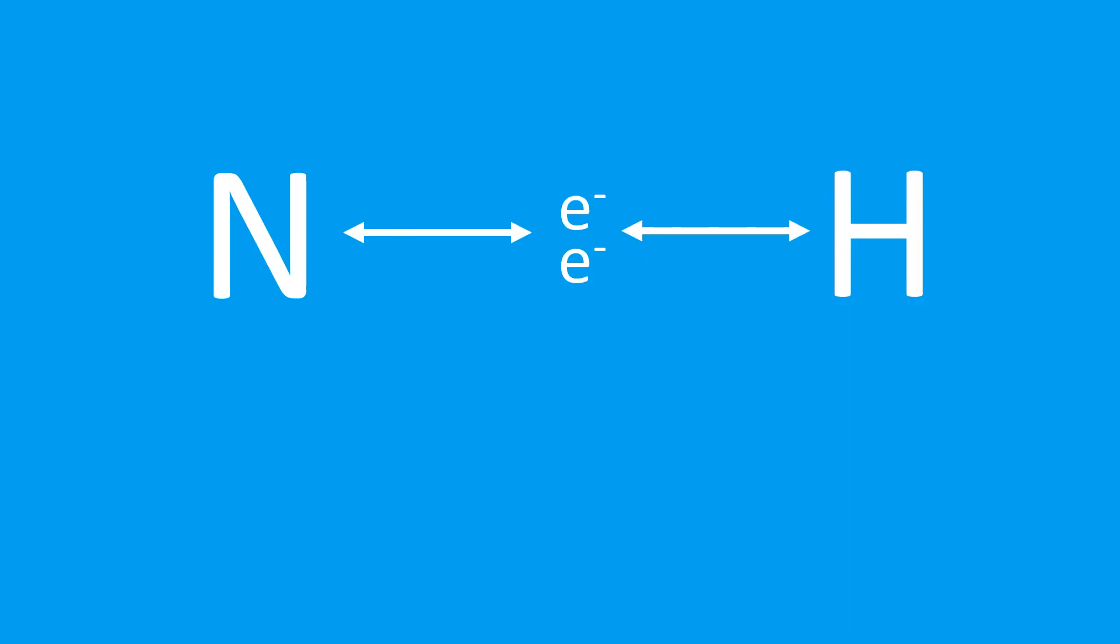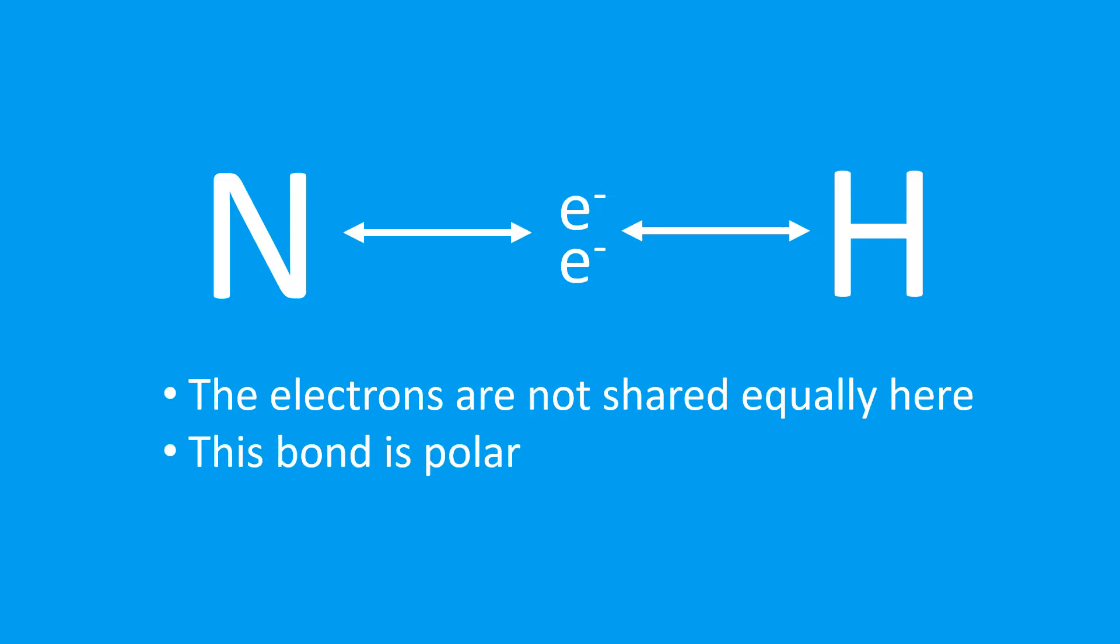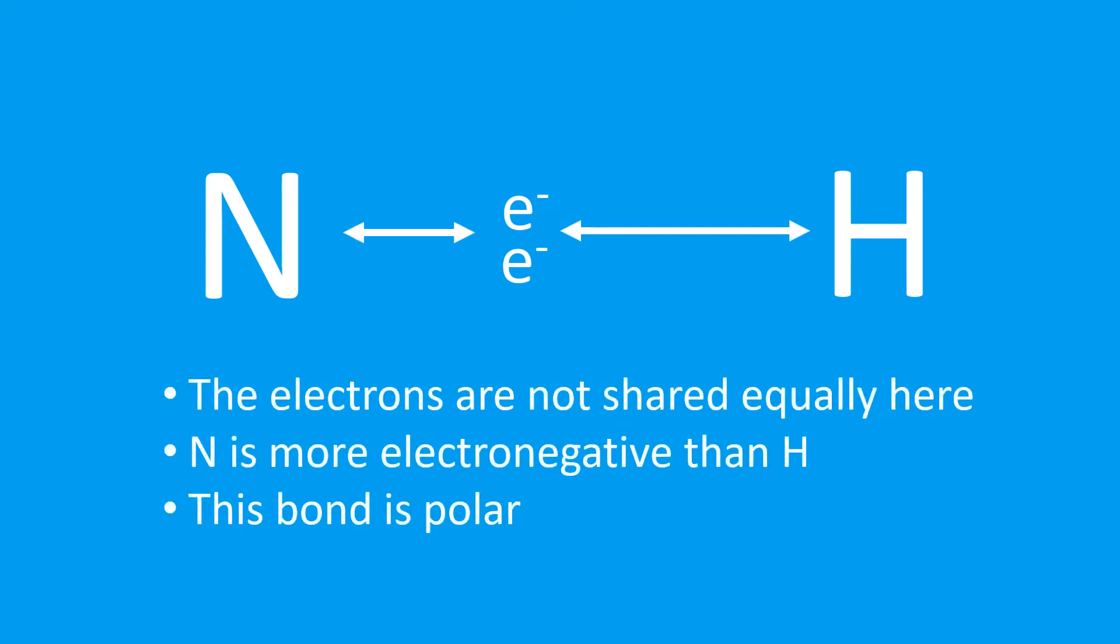Let's look at an example. Here's an N-H bond. The electrons are not shared equally here, the bond is polar, and you'll have seen this on a previous video where we've looked at the difference between polar and non-polar bonds.